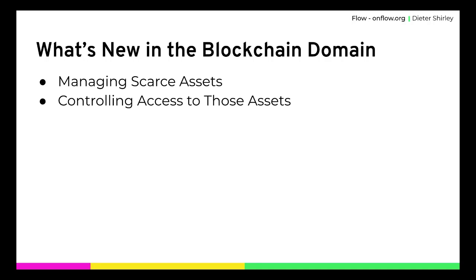The two primary things that are different about software running in blockchains are: first, the ability to create scarce assets. We think of CryptoKitties as scarce assets — yours is different from everyone else's, and what happens when you bring your CryptoKitties together is different than what happens when anyone else does. That scarcity, that individuality of those cats, if it weren't protected by the blockchain, would make for a much less interesting ecosystem.